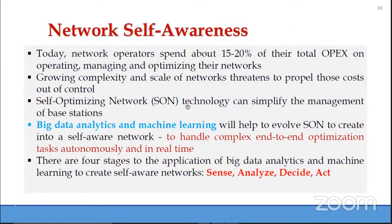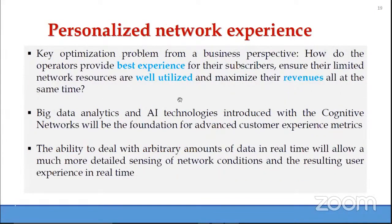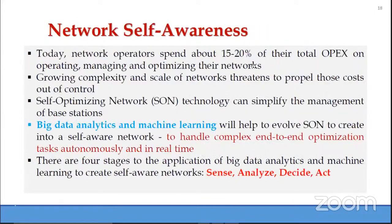Network self-awareness: today network operators spend about 15 to 20% of their total operating expenditure on operating, managing, and optimizing their networks. The growing complexity and scale of the network threatens to propel these costs out of control. The solution is self-optimizing network technology — big data analytics and machine learning will help to evolve it, handling complex end-to-end optimization tasks autonomously and in real time.